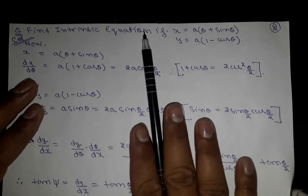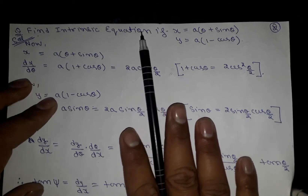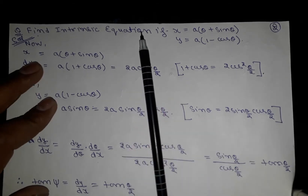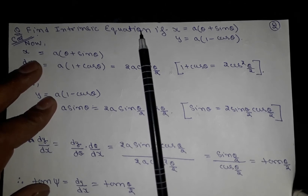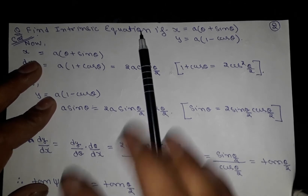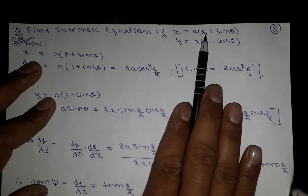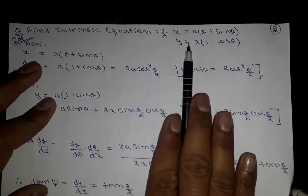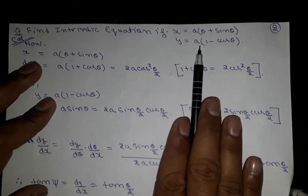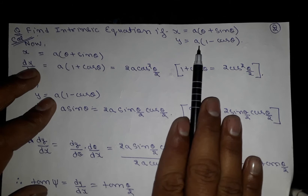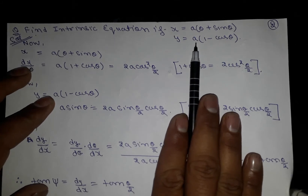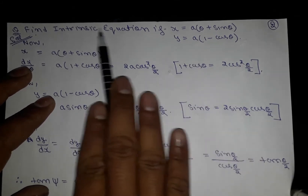Welcome to this site. We are going to discuss how to find the intrinsic equation when the polar coordinates are given: x = a(θ + sinθ) and y = a(1 - cosθ). These two equations are given and we have to find the intrinsic equation.